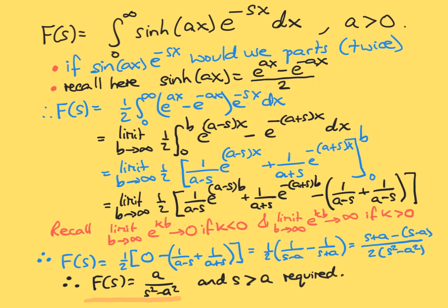So we should recall the definition of the sinh function. All the hyperbolic functions are combinations of exponential functions. So this is the combination which we define to be sinh of AX. It's e to the AX minus e to the minus AX, all divided by two.